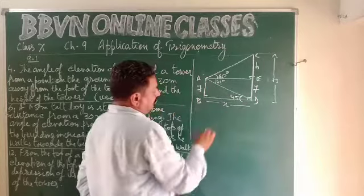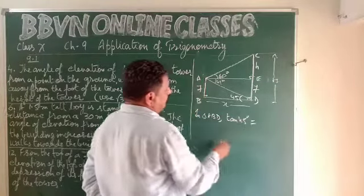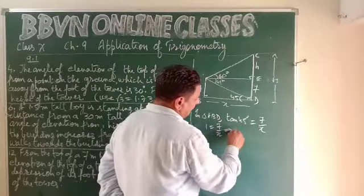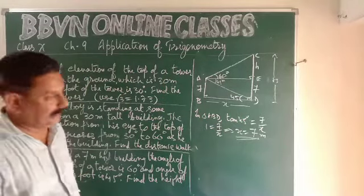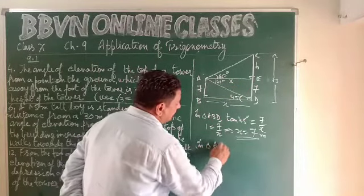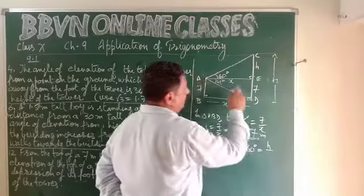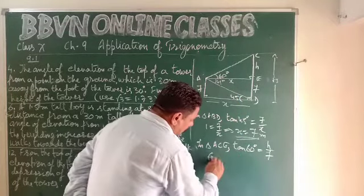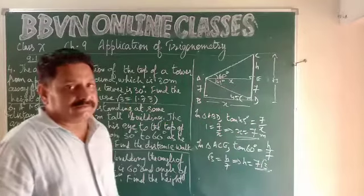We have two triangles: one with 45° and one with 60°. In triangle ABD, tan 45° = perpendicular 7 upon base x. Tan 45 = 1, so x = 7 meters. Now using x to find h: in triangle ACE, tan 60° = h/x = h/7. So √3 = h/7, giving h = 7√3 meters.